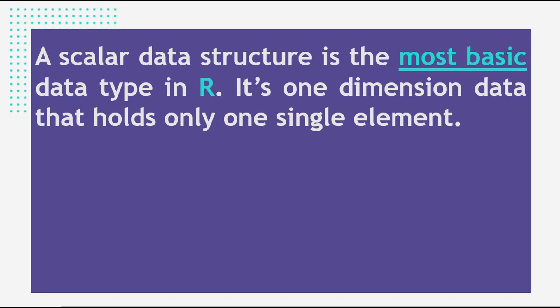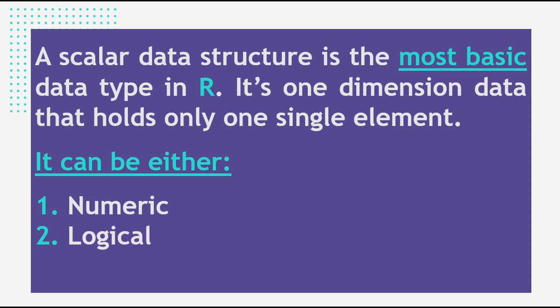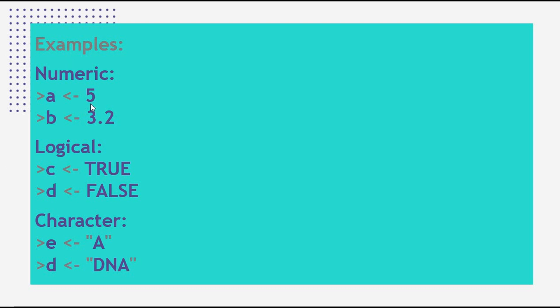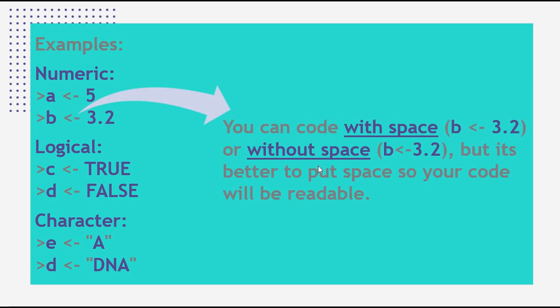A scalar data structure is the most basic data type in R. It is one-dimensional and holds only one single element. It can be numeric, logical, or character. Numeric can be an integer or decimal number, logical can be TRUE or FALSE, and character can be strings or text.